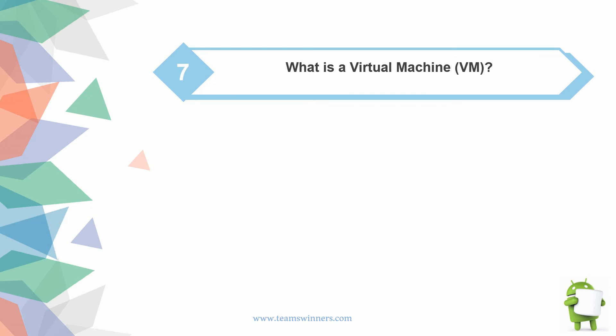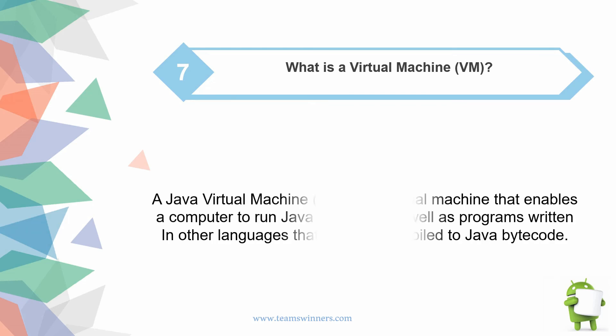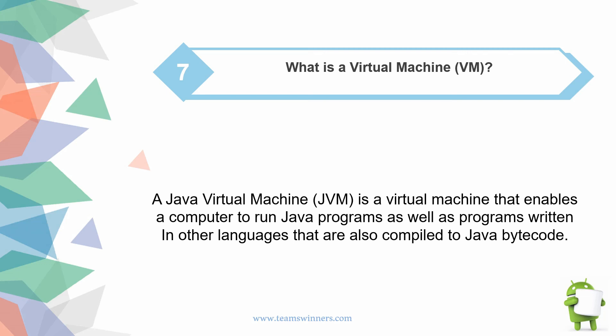What is a virtual machine (VM)? A Java Virtual Machine (JVM) is a virtual machine that enables a computer to run Java programs, as well as programs written in other languages that are also compiled to Java bytecode.